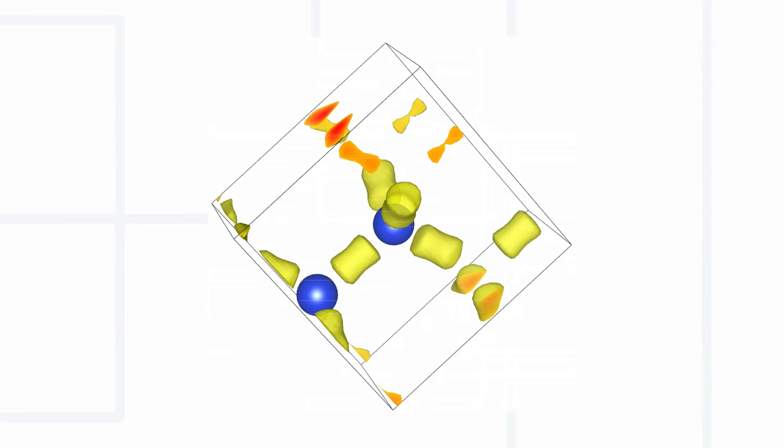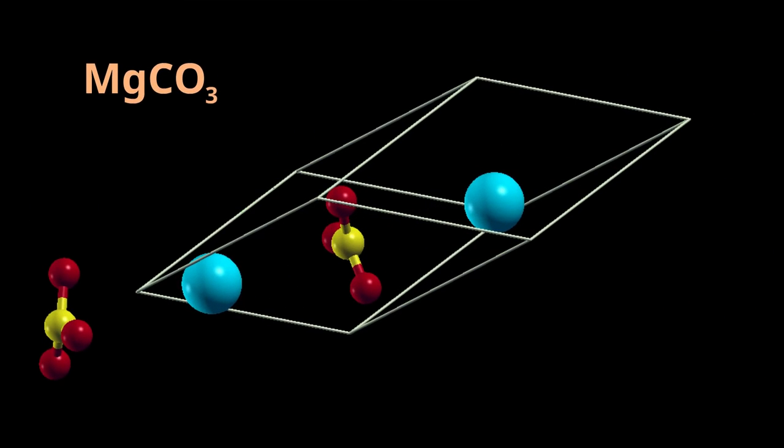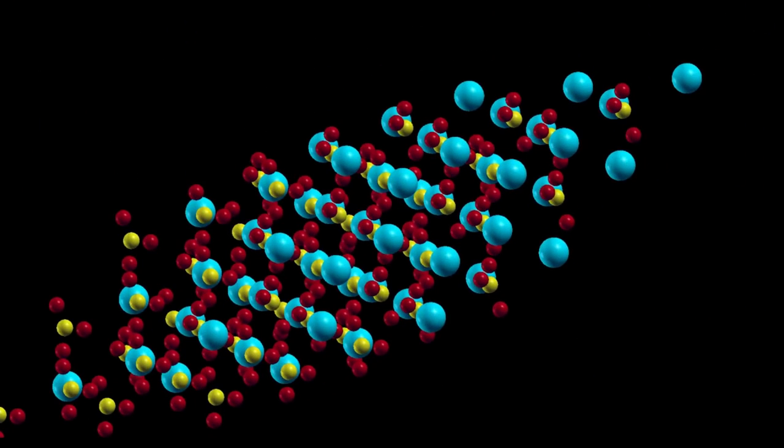Siesta can also be used to make molecular dynamics simulations. This is shown on a crystal of magnesium carbonate. As in the previous example with silicon, this is the smallest structural unit of magnesium carbonate which is sufficient to create a whole structural model of the crystal. From a different angle, different elements of symmetry can be observed.